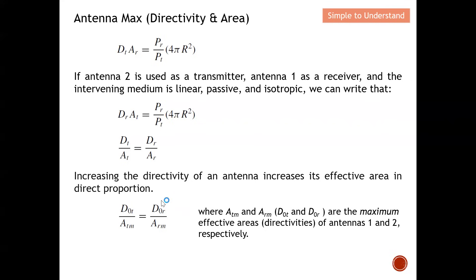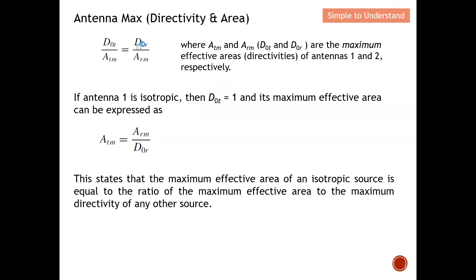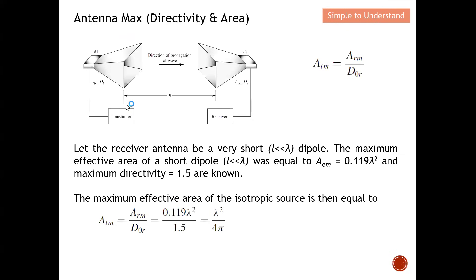If antenna one is isotropic, then its maximum directivity D₀t = 1, and its maximum effective area can be expressed from the previous equation. Cross-multiplying rearranges the equation to show that the maximum effective area of an isotropic source equals the ratio of the maximum effective area to the maximum directivity of any other source: A_tm_iso = A_rm / D₀r.